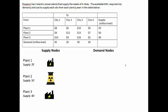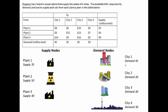Plants two and three have different supplies. Each of our demand nodes in the PowerCo problem is represented by a city, and each city has different power requirements that need to be satisfied by our power plants. City one, for example, requires 45 million kilowatt hours of power, while city four at the bottom only requires 30 million kilowatt hours of power.